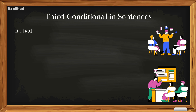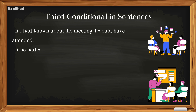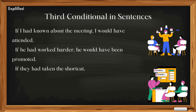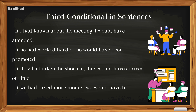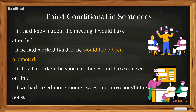Third conditional in sentences: 'If I had known about the meeting, I would have attended.' 'If he had worked harder, he would have been promoted.' 'If they had taken the shortcut, they would have arrived on time.' 'If we had saved more money, we would have bought the house.' Notice how the third conditional — had known, would have attended, had worked, would have been promoted — indicates hypothetical situations that didn't happen.